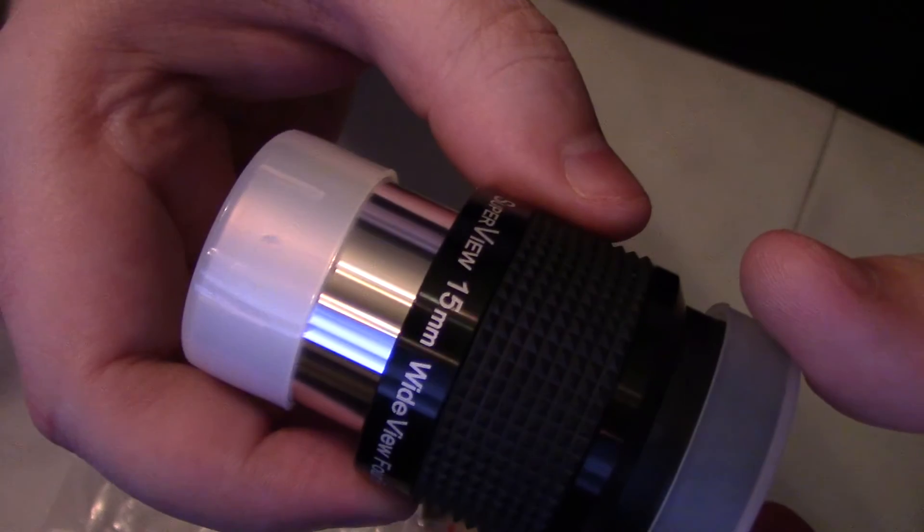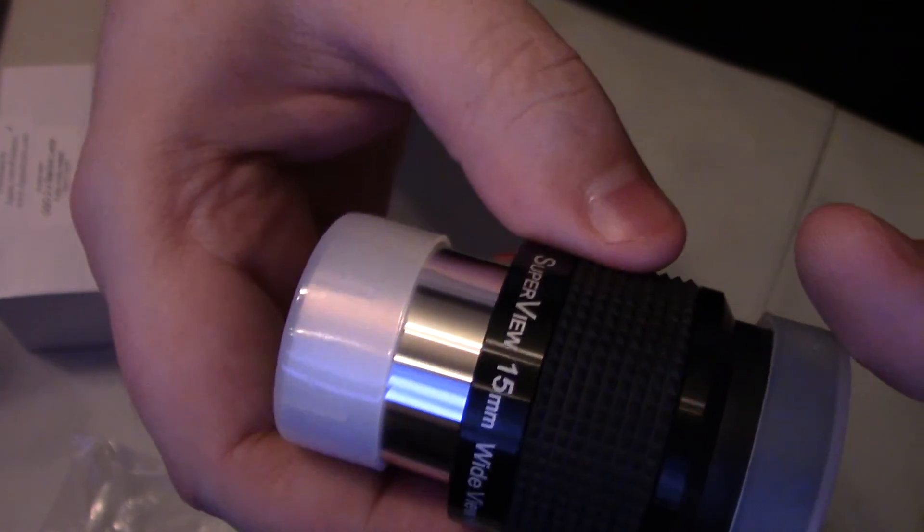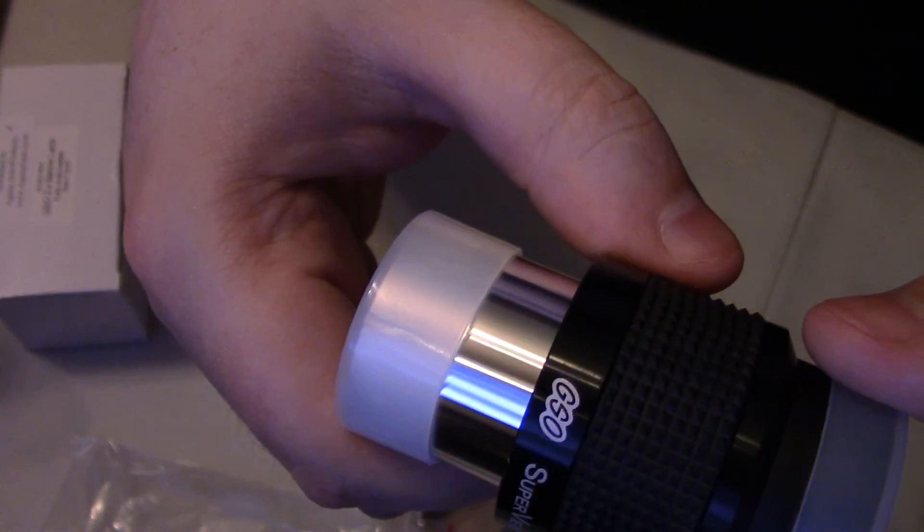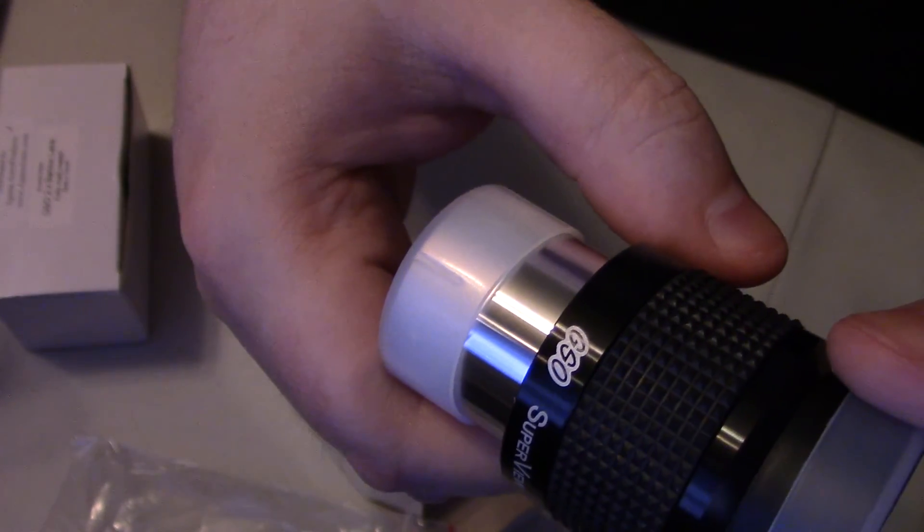Again all these can be gotten from AgenaAstro.com. It can be found in the description below if you're looking for these eyepieces. Great place to find eyepieces if you're looking to upgrade your telescope.